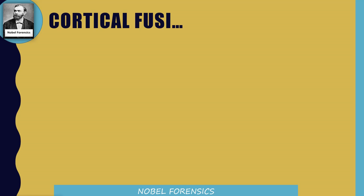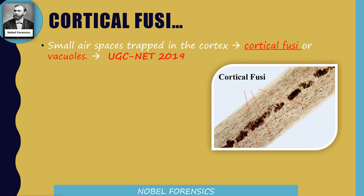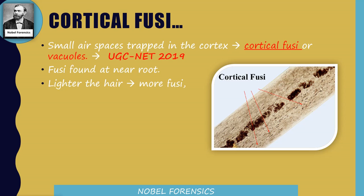Cortical fusae are small air spaces trapped in the cortex, also known as vacuoles. This is a previous question from 2019. Fusae are found mostly near the root. If hair contains more cortical fusae, the hair will be lighter in weight. If it contains less fusae, then more weight — lighter hair means more fusae.